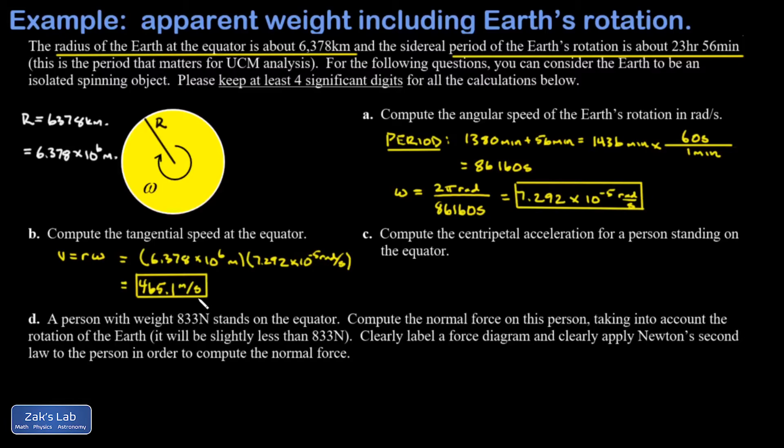In part C, I want the centripetal acceleration for a person standing on the equator. In the picture we're looking down on the Earth from below the South Pole. I can draw a person on the equator over here, and to be moving in this circular motion they must be accelerating to the center of curvature—that's the centripetal acceleration.